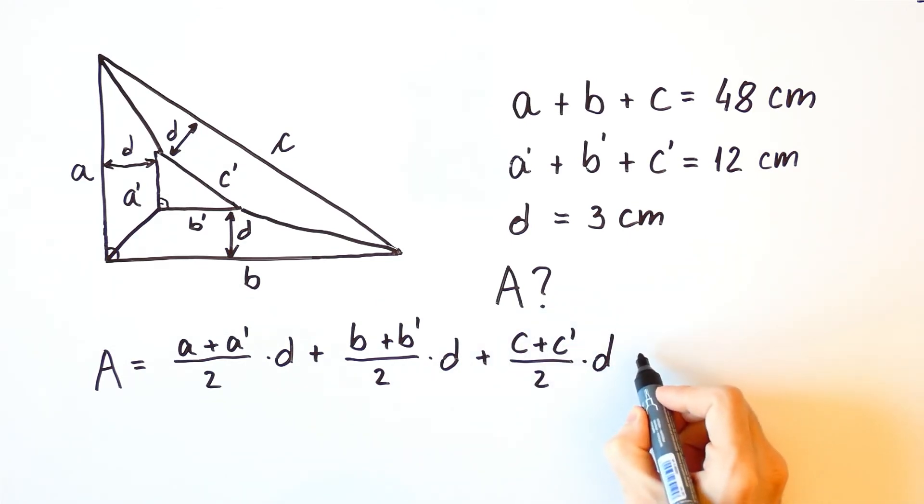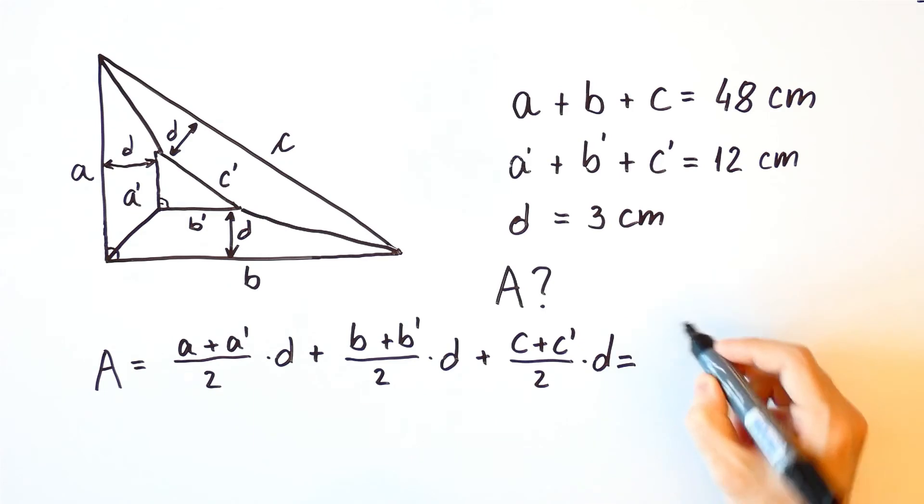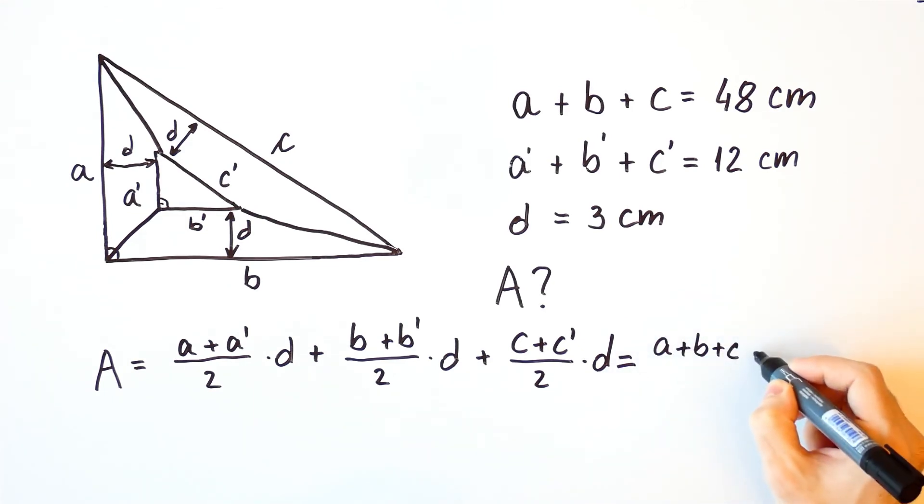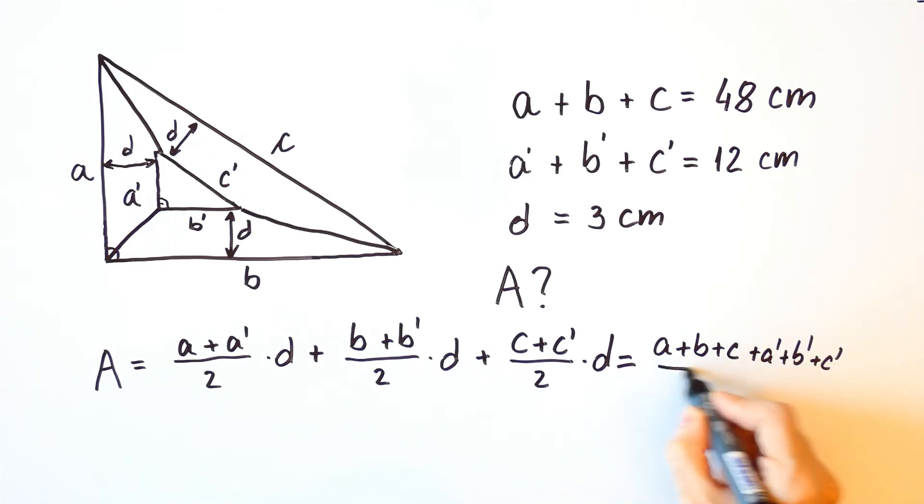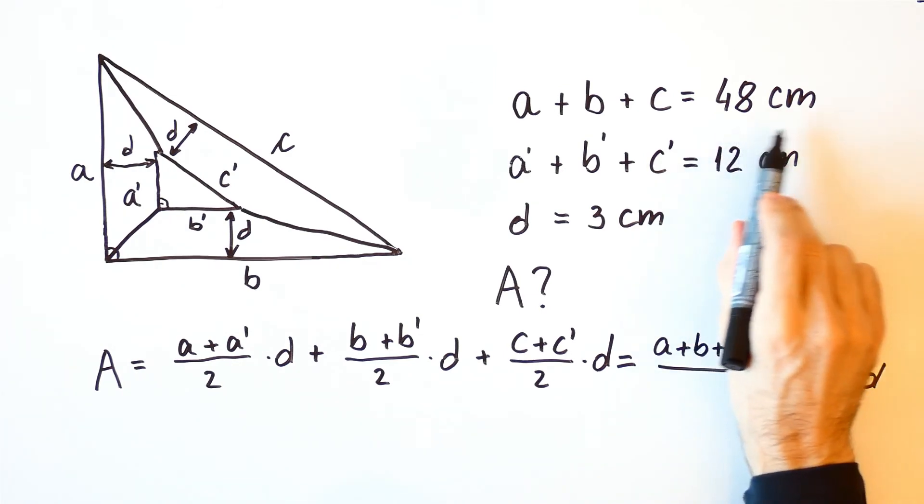So, the total area of this trapezium is equal to A plus B plus C plus A prime plus B prime plus C prime over 2 times D. But A plus B plus C is 48 centimeters.